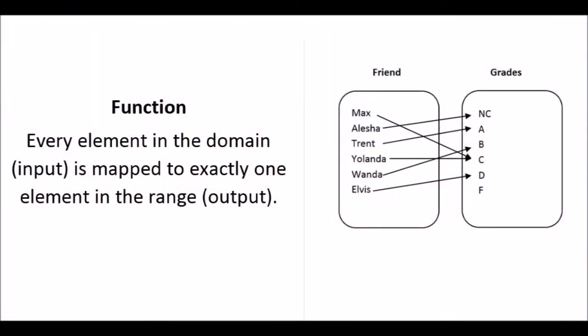Let's start with the definition: every element in the domain is mapped to exactly one thing in the range. What I have here is a mapping. I have my friends, which is the domain, and I have their grades, which is the range. Every friend has a specific grade. This right here is a function because every friend has one grade.